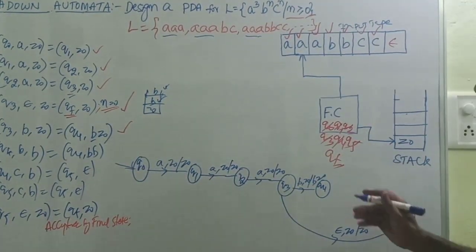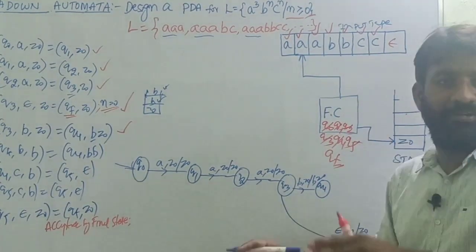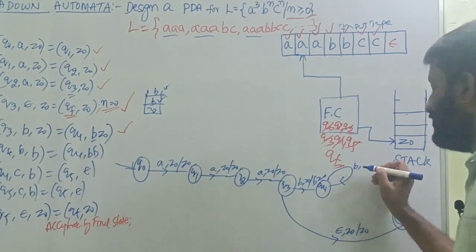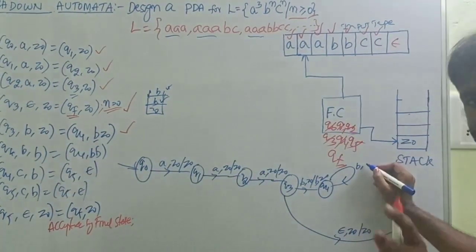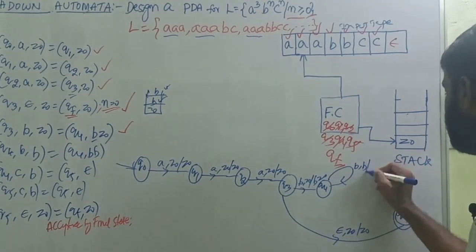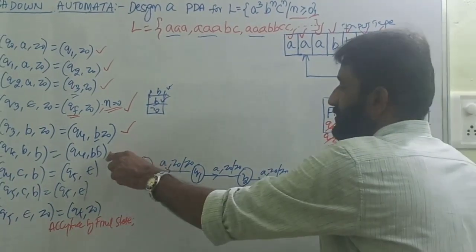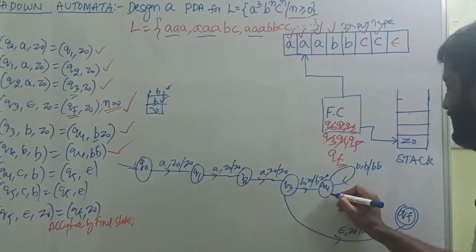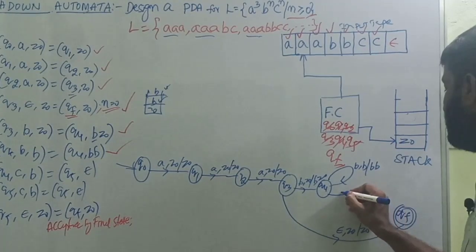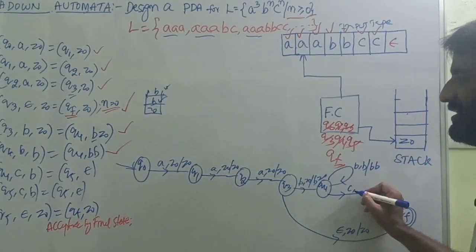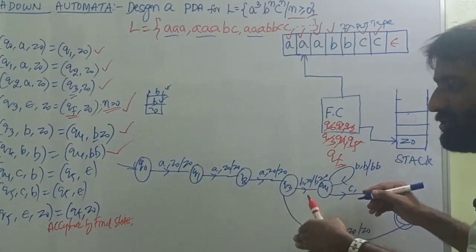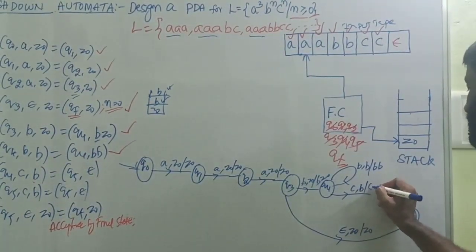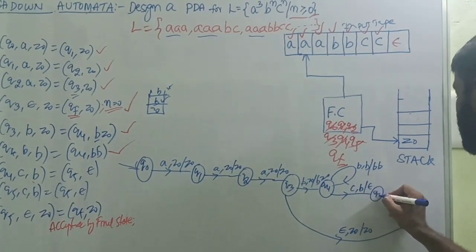On Q4, all remaining B's are read using a self-loop. The self-loop label is: input B, top of stack B, add B onto the stack — B, B / B B. After reading all B's, on Q4 we see input C with top of stack B already pushed. So doing the pop operation by changing to new state Q5 — label C, B / epsilon.